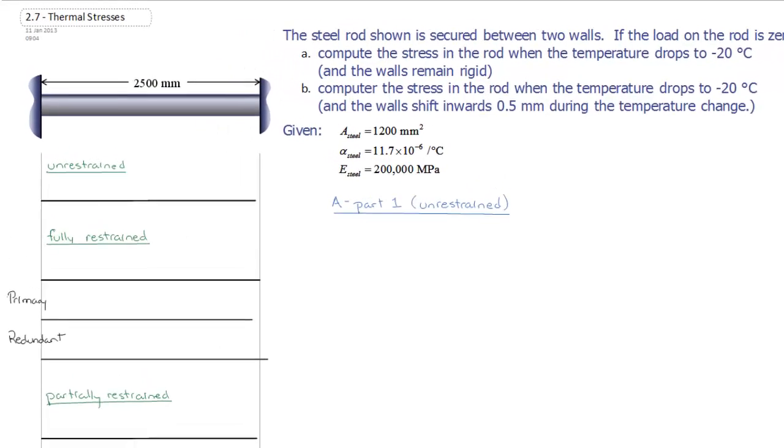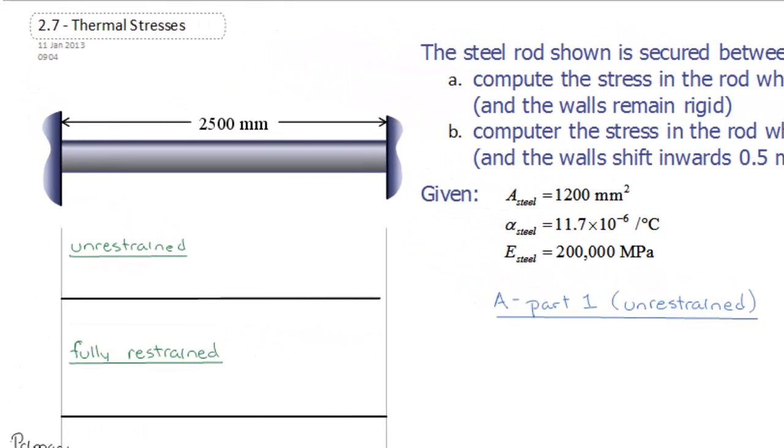To set up Part A then, I have free body diagrams set up here labeled unrestrained. I'm just going to note my support here. We know that there aren't going to be any loads actually developed within that, so I'll just show it as holding it so it doesn't go floating off into space. What I want to do is label my displacement at this end as delta T, or my displacement due to thermal.